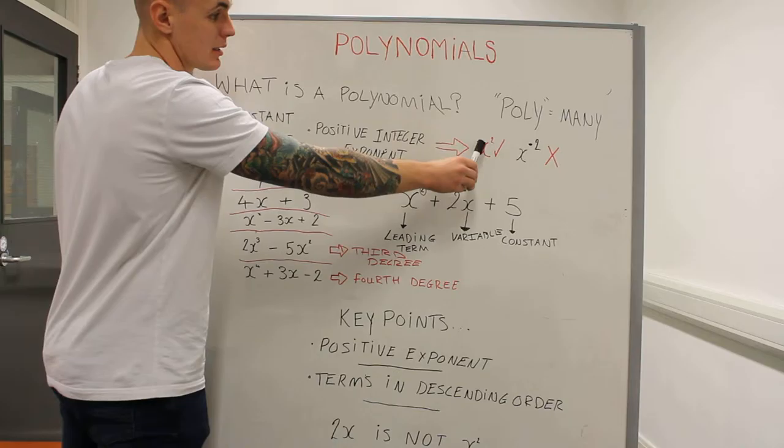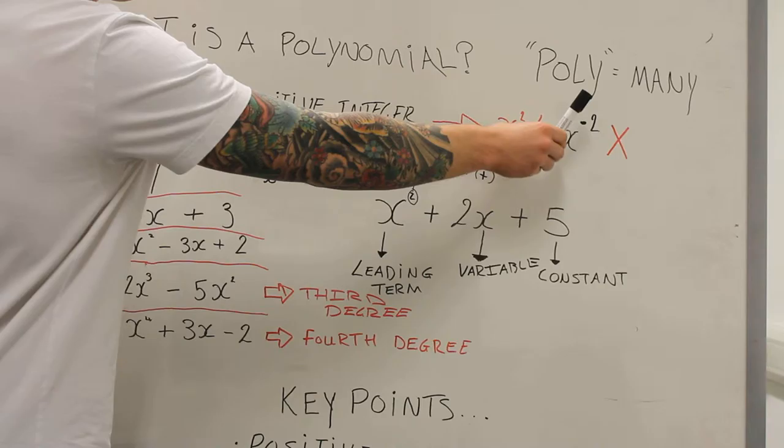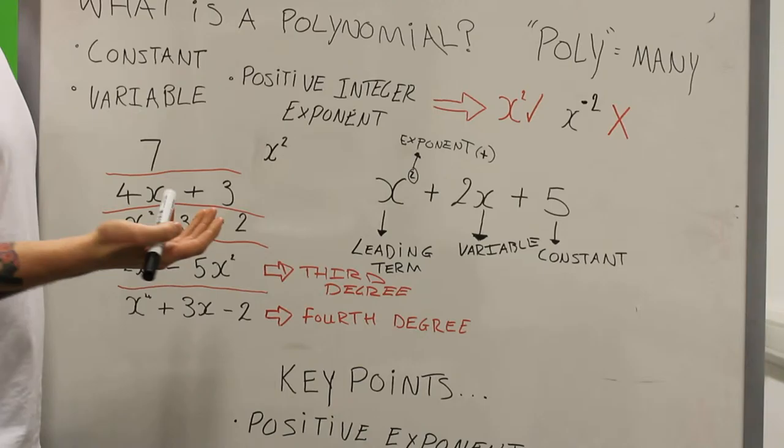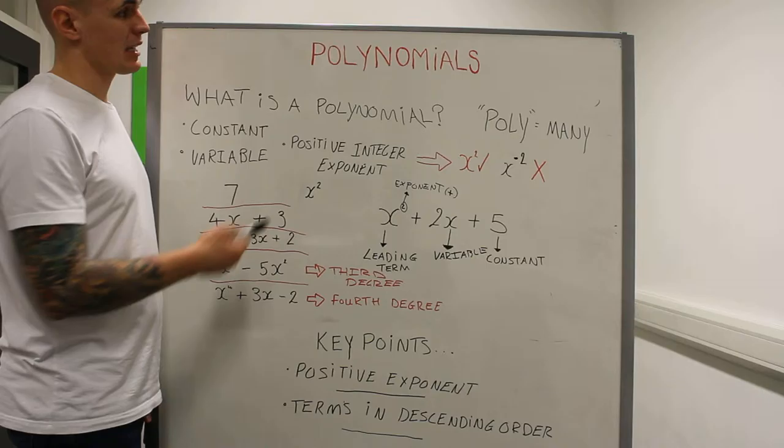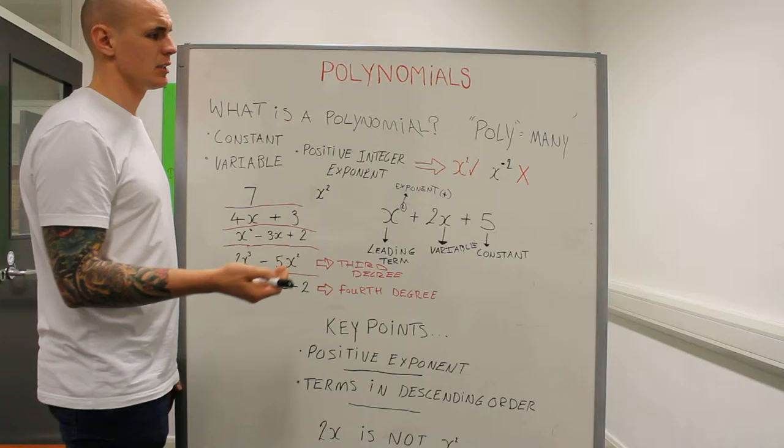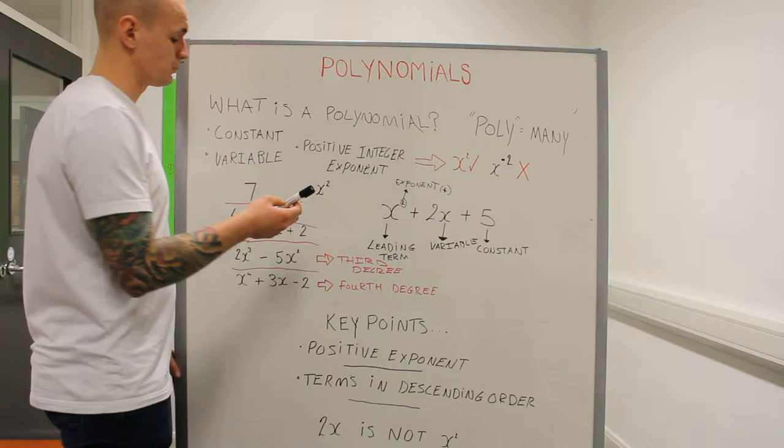I just want to go over the point that the positive integer exponent is really important because if the exponent is a negative value then it's not a polynomial. So here we have x squared, the squared is a positive value so that means it is a polynomial. Here we have x to the minus 2 which means it is not a polynomial.